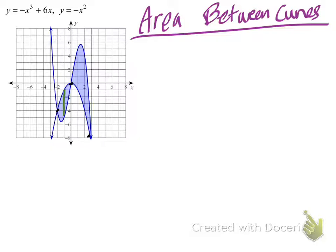Let's find the area of the region marked with the green rectangle. That's the sum of rectangles from -2 to 0, where the top function (remember, upper minus lower) is the parabola, -x², minus the bottom function, which is the cubic. I'm careful with parentheses since I'm subtracting the entire function: -(-x³ + 6x).